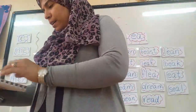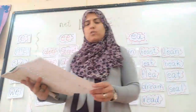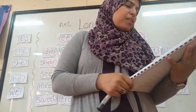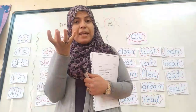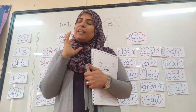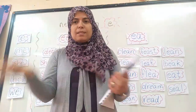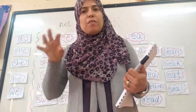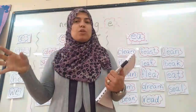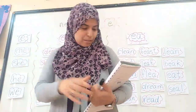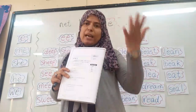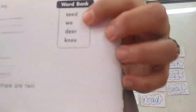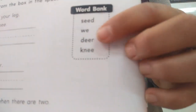We finished page 20. I will skip page 21 and do page 22. Here it says: complete each riddle, then write the correct word from the box in the space. A riddle is when I tell you about something — like 'something red or yellow or green and I like to eat it' — and you have to figure out it's an apple. You have to read the words in the word bank to help answer. I have the words: seed, we, deer, knee.